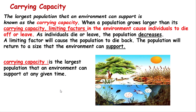The largest population that an environment can support is known as the carrying capacity. When a population grows larger than its carrying capacity, limiting factors cause individuals to die or leave. For example, if a water source is enough for 100 animals but there are 1,000, some animals will die or move to find another ecosystem. As individuals die or leave, the population decreases and returns to the size the environment can support.